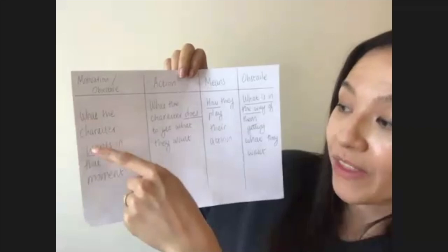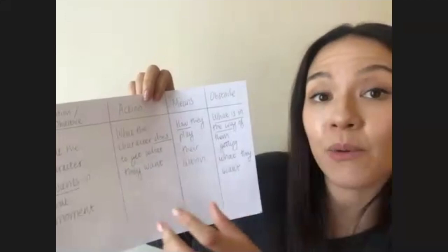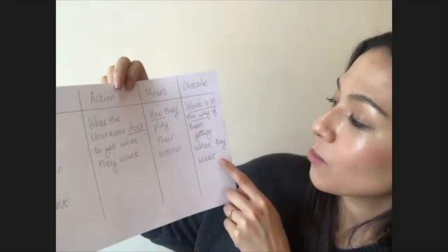Gia has asked what the headings for the table are. I'll put this up online in the summary, but they are: what you want — your motivation or objective, what the character wants in that moment; the action — what the character does to get what they want; the means — how they play their action; and the obstacle — what is in the way of them getting what they want.